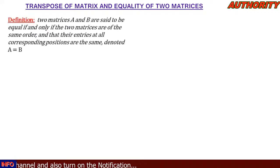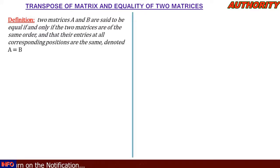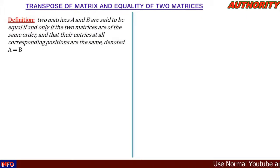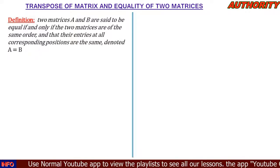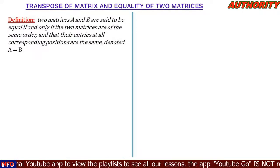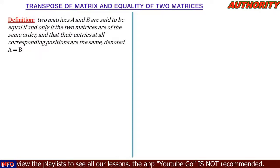What does equality of two matrices mean? We say that two matrices A and B are said to be equal if and only if the two matrices are of the same order and their entries at all corresponding positions are the same.